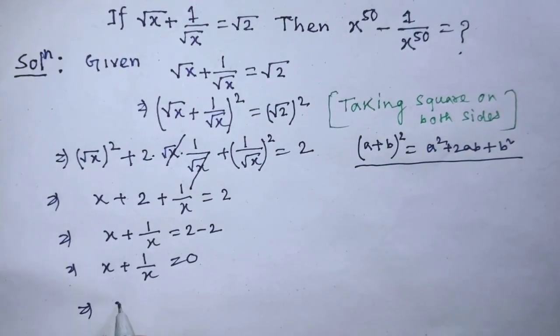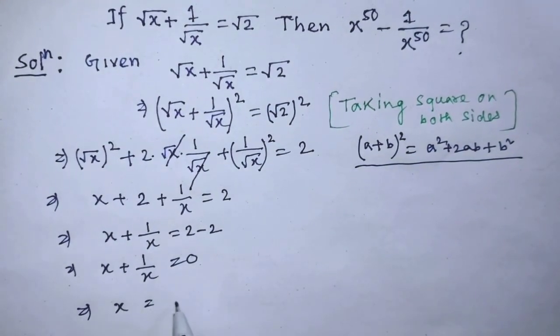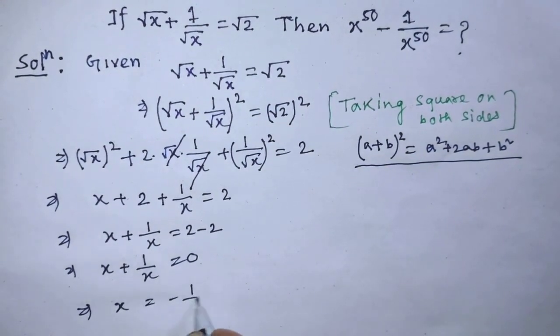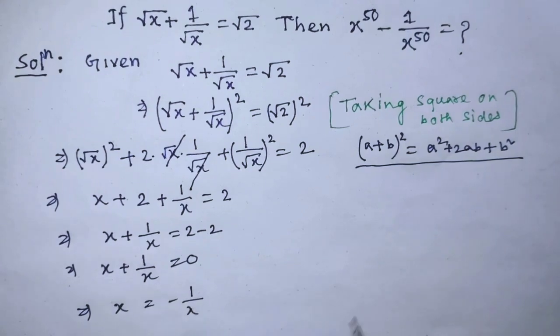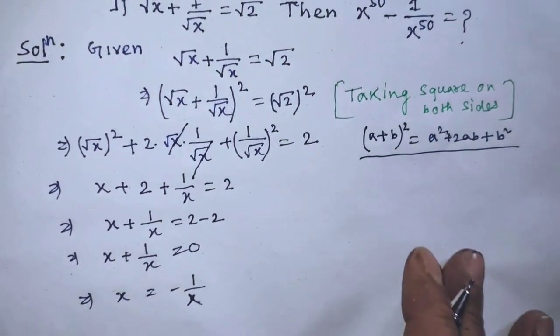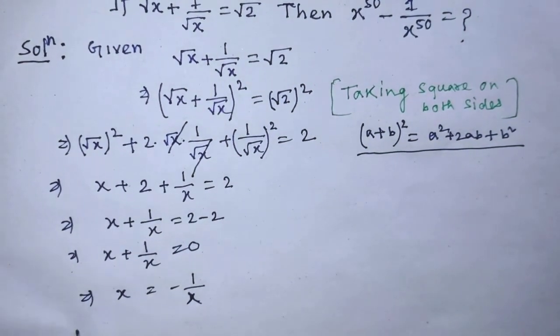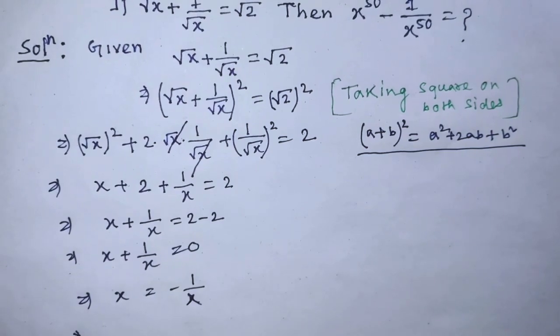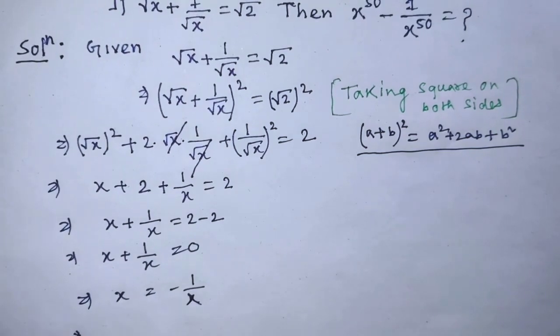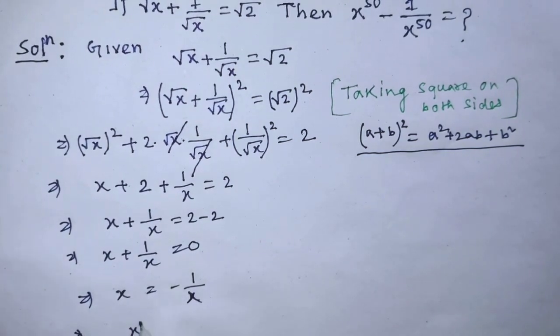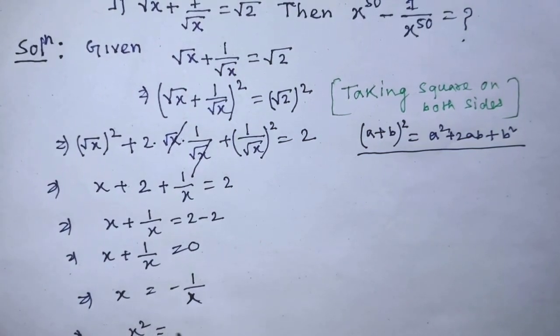From x plus 1 over x equals 0, we can write x equals minus 1 over x. According to the cross multiplication rule, we get x squared equals minus 1.